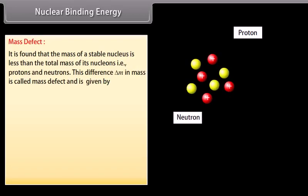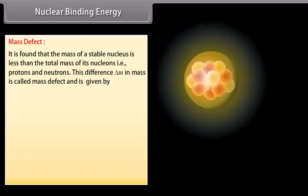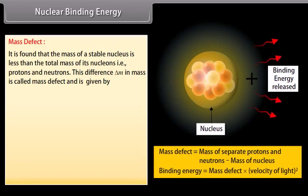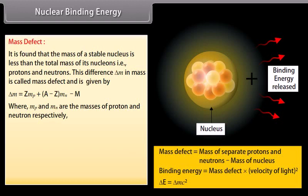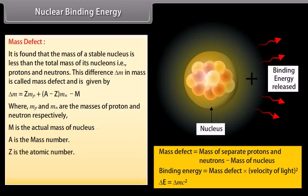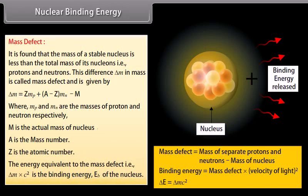Nuclear binding energy — mass defect: it is found that the mass of a stable nucleus is less than the total mass of its nucleons, that is protons and neutrons. This difference ΔM in mass is called mass defect and is given by ΔM = Z·Mp + (A−Z)·Mn − M, where Mp and Mn are the masses of proton and neutron respectively, M is the actual mass of the nucleus, A is the mass number, and Z is the atomic number. The energy equivalent to the mass defect, ΔM × c², is the binding energy Eb of the nucleus.